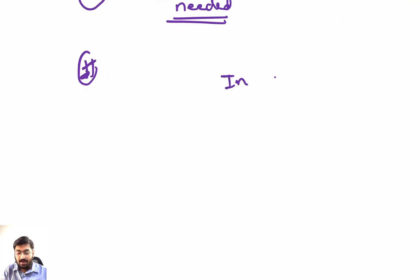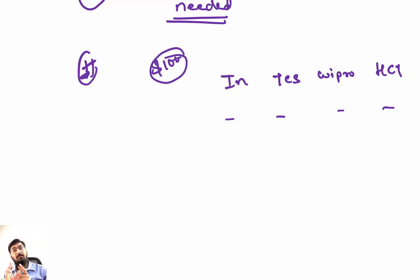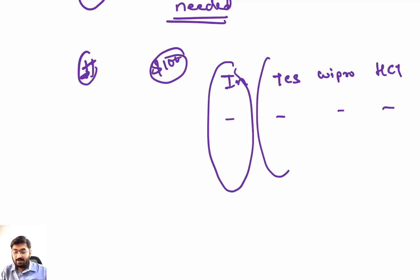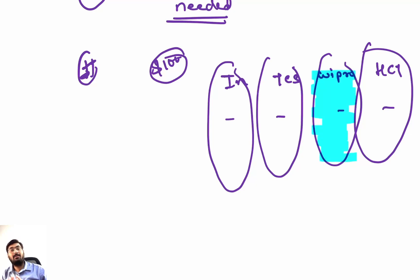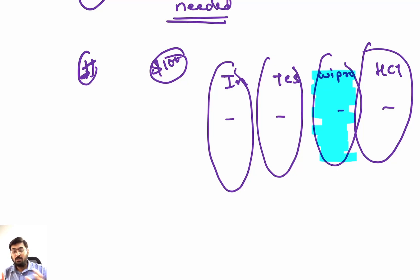Say I have Infosys, TCS, Wipro, and HCL. I have a limited amount of money — $100 — and I can invest in only one company. So which one is best? Where should I park my money? After doing all the analysis, I found out that Wipro is best on all parameters: P/E ratio is good, profitability is good, profit margins are good, sales are increasing, and even during bad times they are able to generate business and profits. So I will put my money in Wipro.